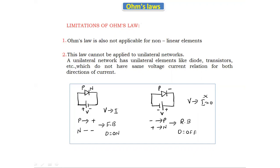There is no linear relation between voltage and current in this case. In forward bias, increasing voltage changes the current, but in reverse bias, increasing voltage produces no change in current. That's why Ohm's Law is not applicable for non-linear elements — there is no consistent linear relationship between voltage and current across both directions.